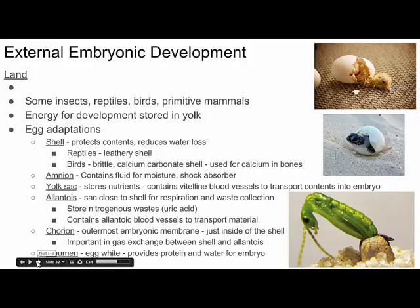The things we need to talk about today are related to development. We know that in animals, for reproduction, we first need fertilization to take place. After fertilization, that initial zygote needs to grow into the offspring. Development is about where that happens, where that process takes place. We generally split it into two categories: development can happen either internally or externally.